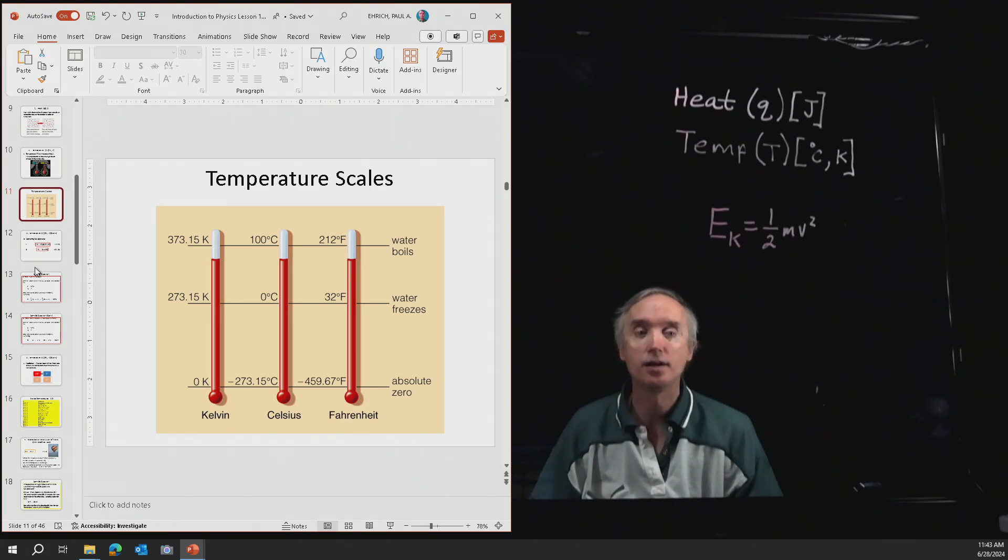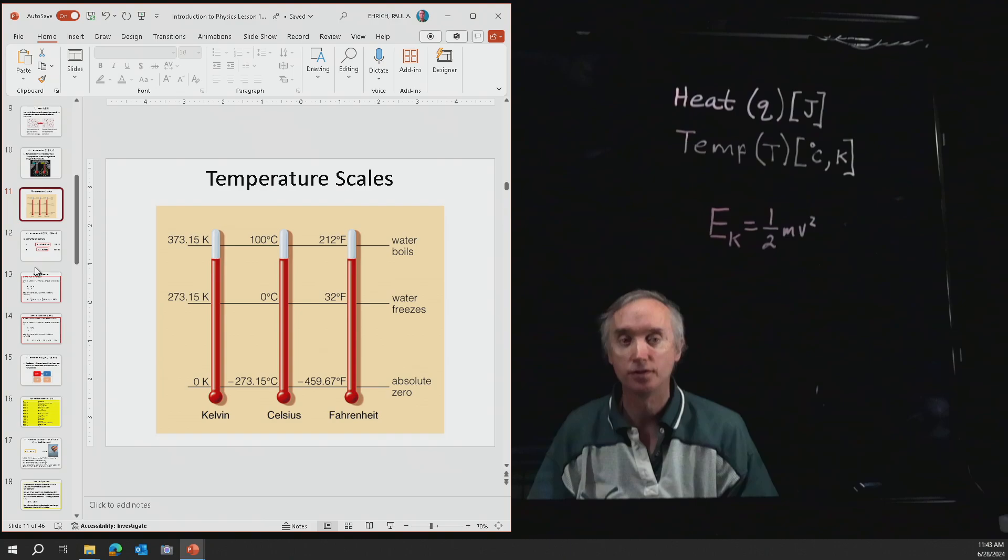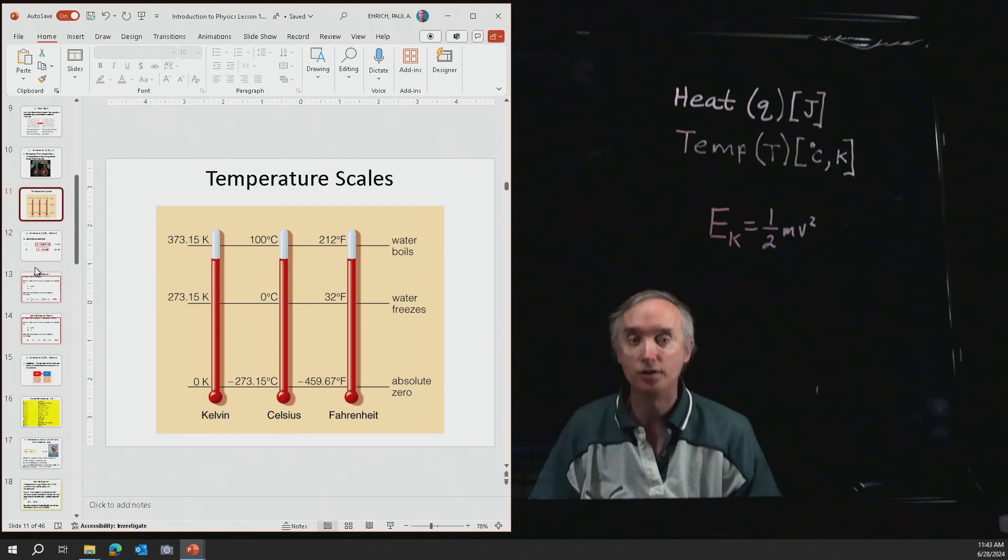Here in the United States, we like to use the Fahrenheit scale. Room temperature is about 72 degrees Fahrenheit. Water will freeze at 32 degrees Fahrenheit, and water will boil at 212 degrees Fahrenheit at one atmospheric pressure.